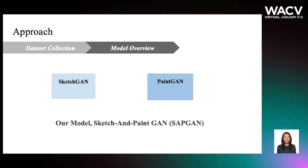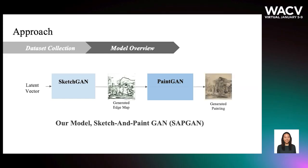How do artists create paintings? They sketch first, and then paint. Similarly, we split our model into two steps: a SketchGAN and PaintGAN. We show our proposed model Sketch and PaintGAN, or SAPGAN for short. SketchGAN will first generate a latent vector and then an edge map, which serves as the sketch. PaintGAN will then take this sketch and translate it into a generated painting. From end to end, there is no human-provided input needed.